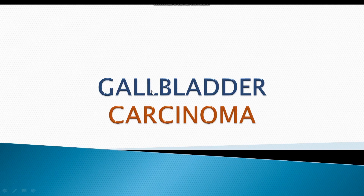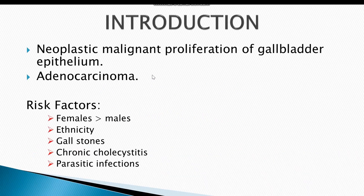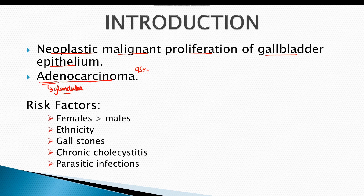The topic of our discussion today is gallbladder carcinoma. Gallbladder carcinoma means neoplastic malignant proliferation of gallbladder epithelium. In 95% of cases, gallbladder carcinoma is adenocarcinoma — 'adeno' meaning glandular and 'carcinoma' meaning malignant proliferation of epithelial cells.